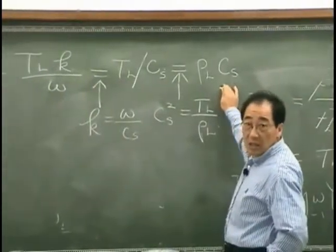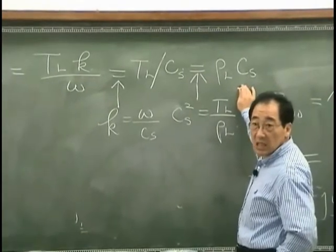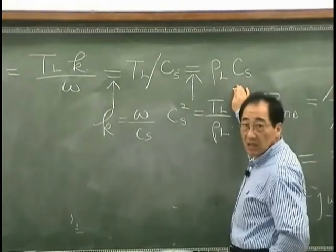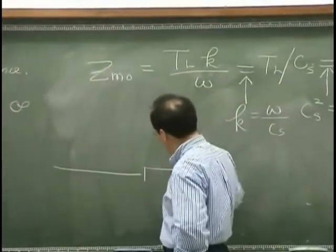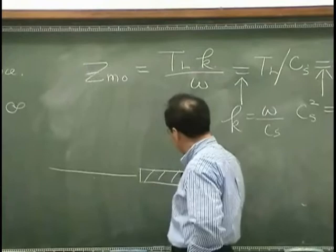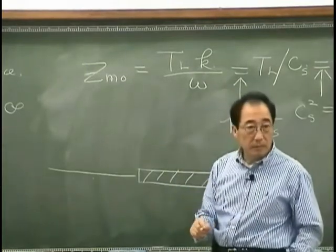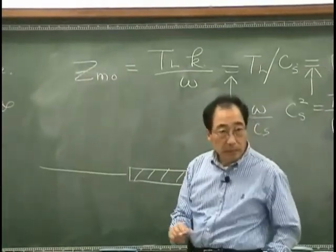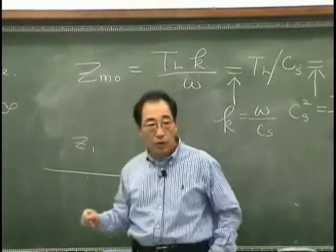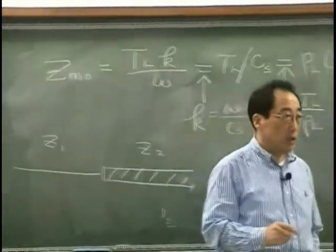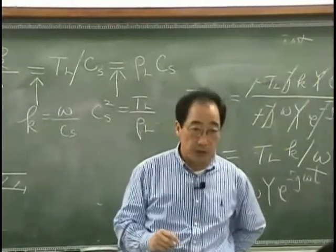What is this? Remember when we have a thin string and a thick string problem. Z1 and Z2, that was considered to be the characteristic impedance of a string.